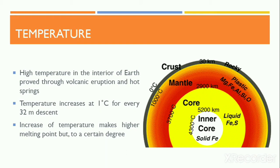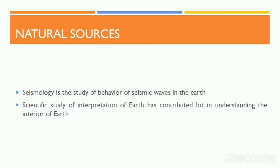At the junction of the mantle and the outer molten core, the temperature reaches 3,700 degrees Celsius, and it reaches 4,300 degrees Celsius at the junction of the outer core and the inner solid core. Now let's look into the natural source — the study of seismic waves in the Earth, which we term seismology.